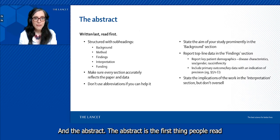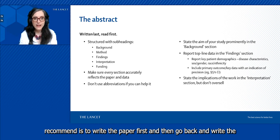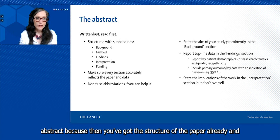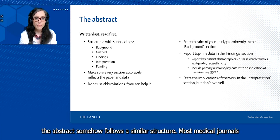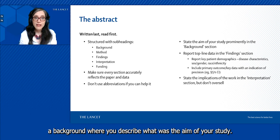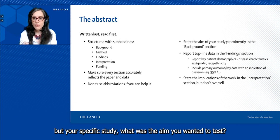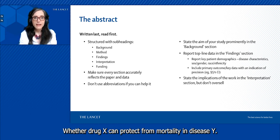The abstract is the first thing people read, so you should spend some time on this part. What we usually recommend is to write the paper first and then go back and write the abstract, because then you've got the structure of the paper already and the abstract follows a similar structure. Most medical journals have structured abstracts; this means there are subheadings.